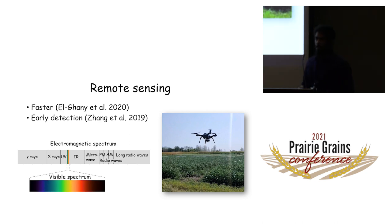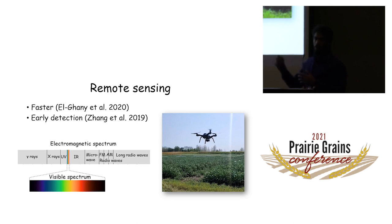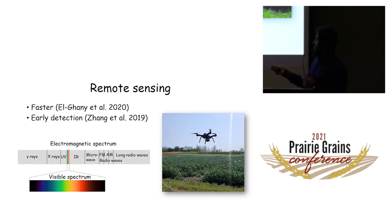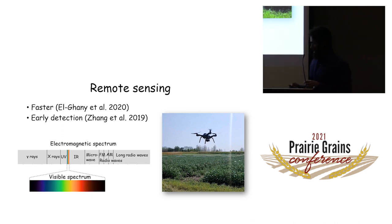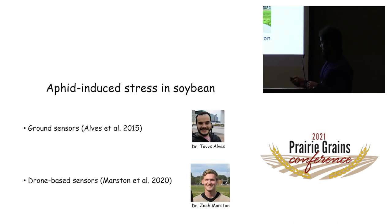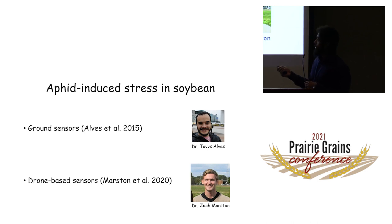Remote sensing is emerging as an alternative because it can be faster and allows for early detection of plant stresses. We use sensors that detect changes in the electromagnetic spectrum — from incoming sunlight, the light reflecting especially in the visible spectrum, but also in the infrared. Previous studies in the lab, done by graduate students of Bob, found that ground sensors can be used to detect aphids.